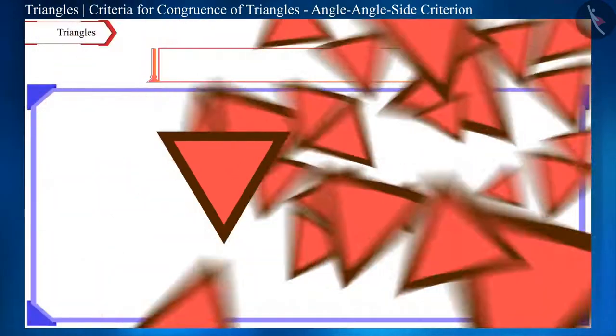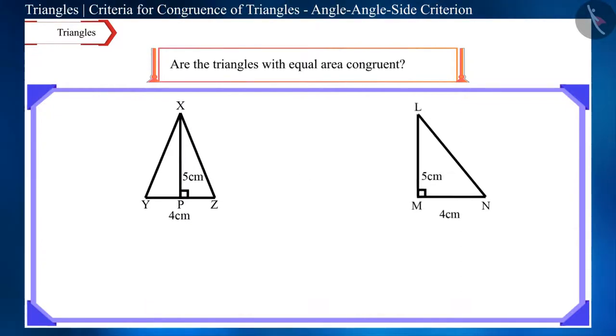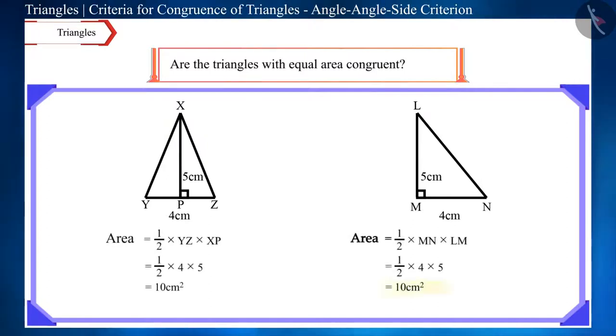Can we say that triangles with equal area are congruent? No. Look at these two triangles. Their areas are equal, but these triangles are not congruent.